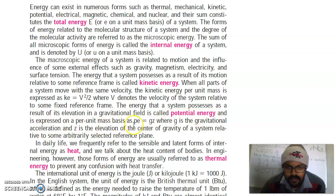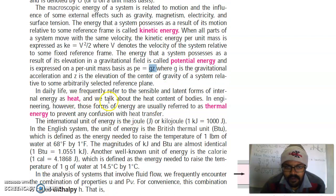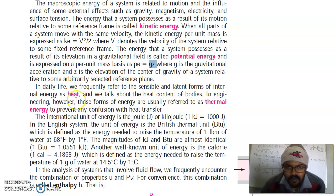The energy that a system possesses as a result of elevation in the gravitational field is called potential energy and is expressed on a per unit mass basis as gz. In daily life, we frequently refer to the sensible and latent forms of energy as heat and we talk about the heat content of a body. In engineering, however, those forms of energy are usually referred to as thermal energy.